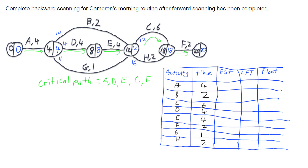The earliest start times from forward scanning are: A was 0, B was 4, C was 12, D was 4, E was 8, F was 18, G starts at 4, and H starts at 12.